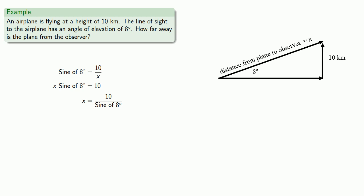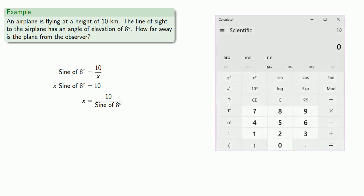Now, as far as the algebra is concerned, 10 over the sine of 8 degrees is a perfectly good answer. If we want to go further, we're going to have to use a calculator or some other device. Here, our angle is measured in degrees, so we'll need to make sure that our calculator is set into degree mode.